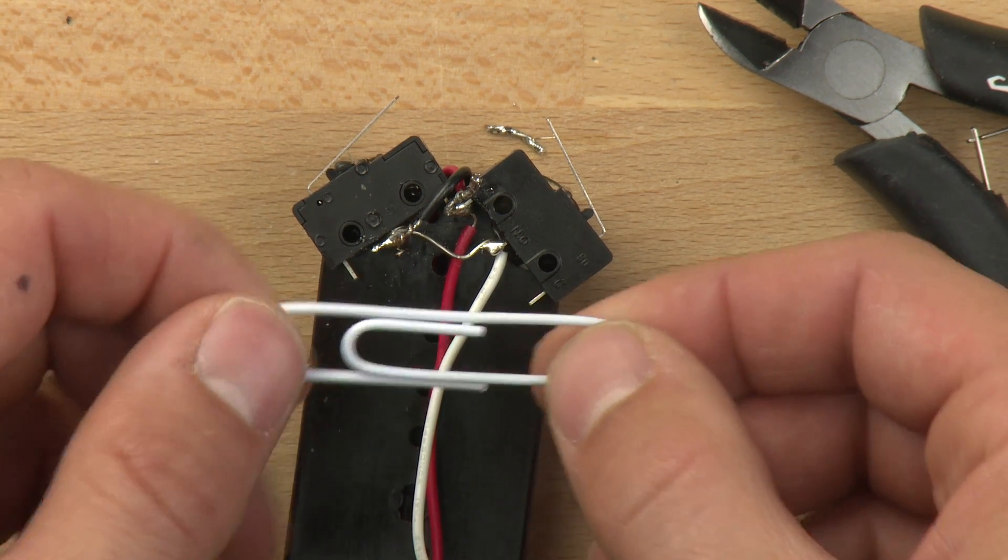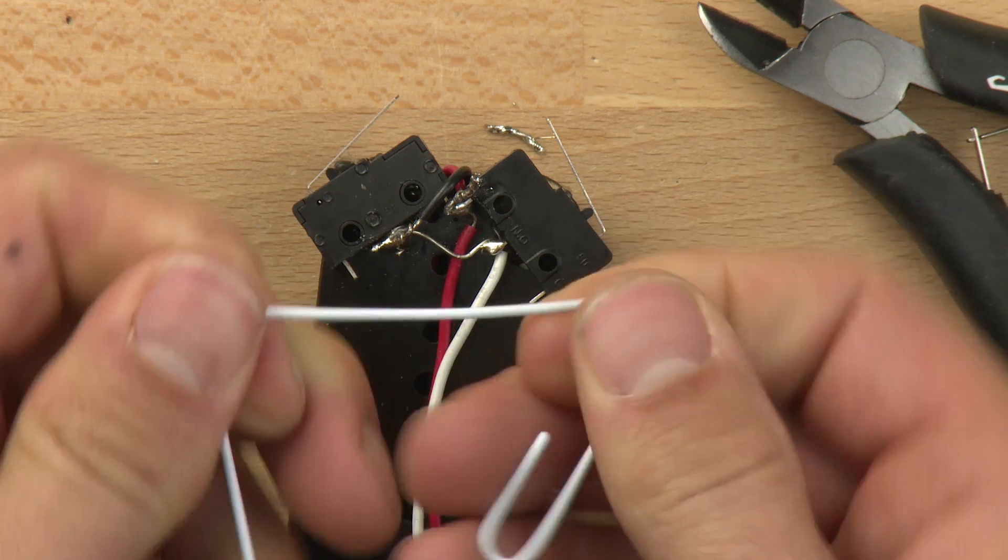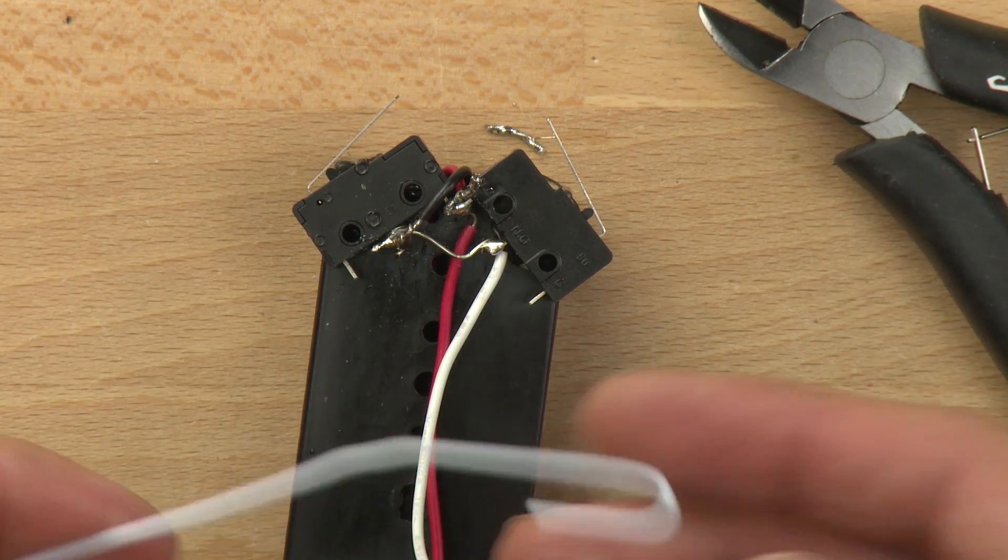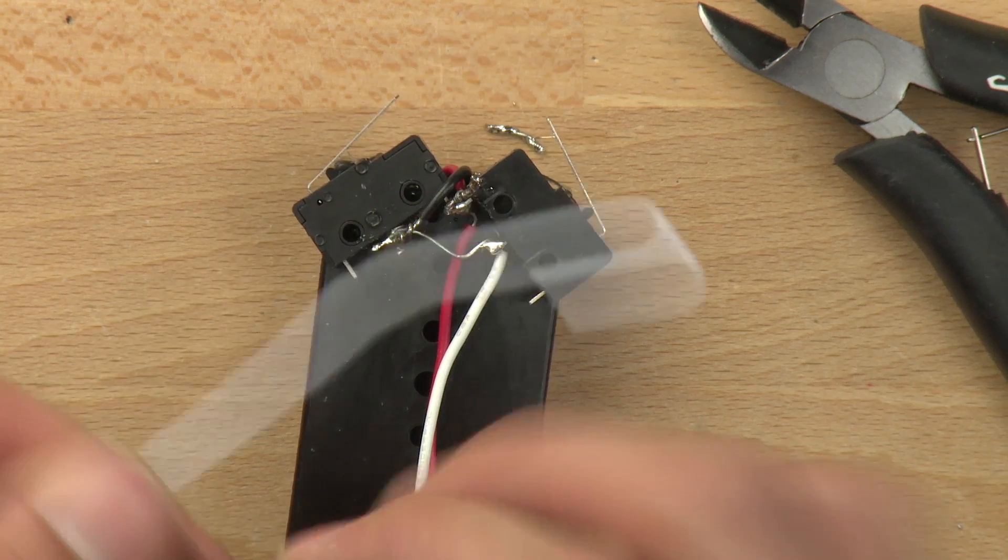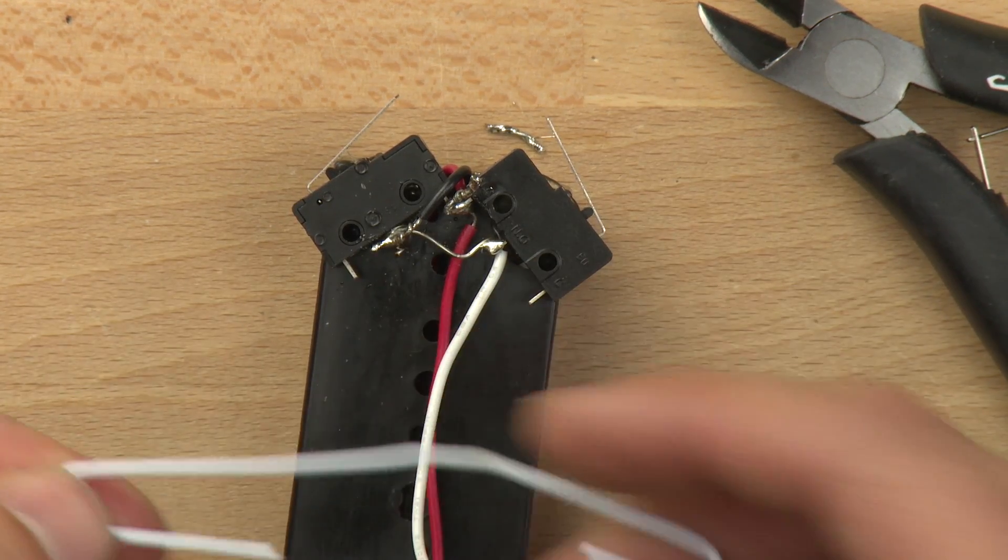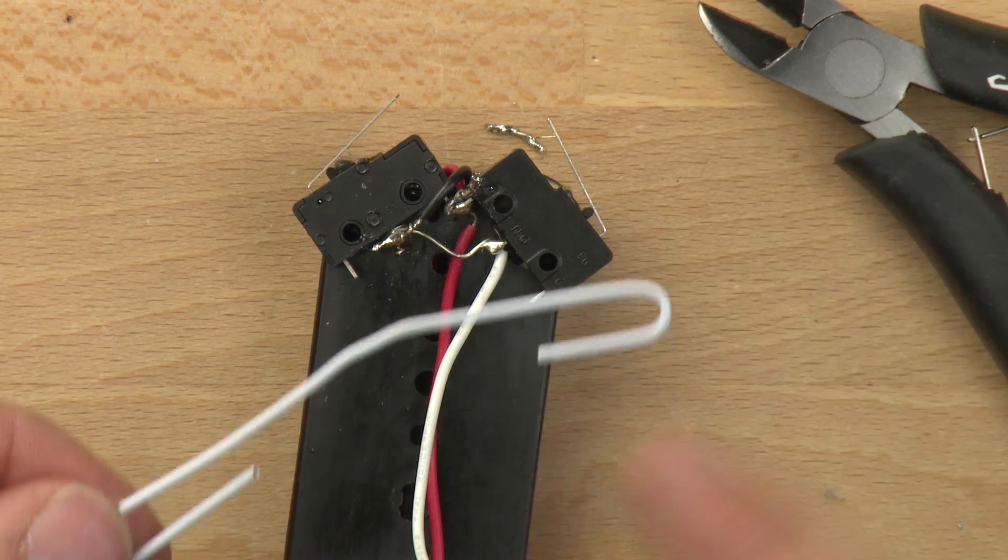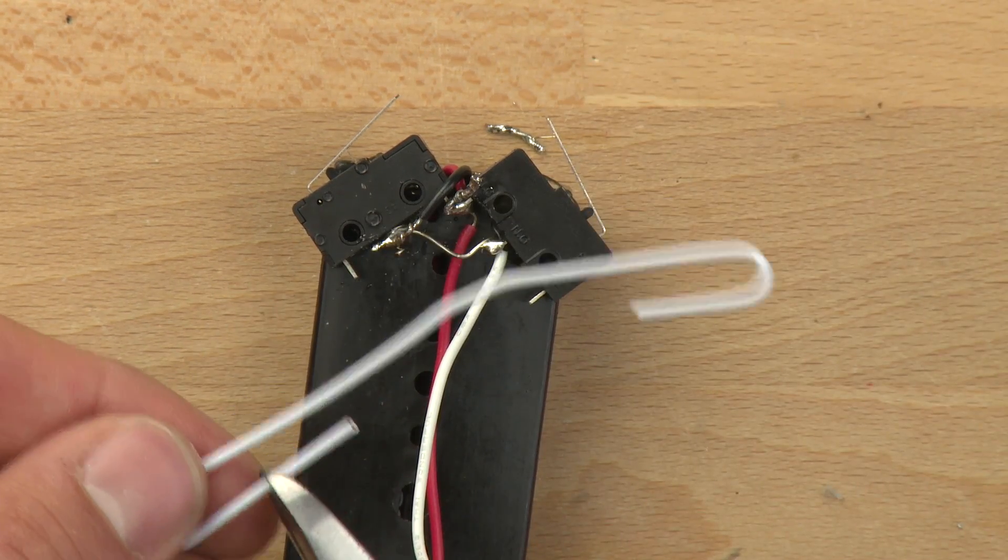We're going to take our paper clip and bend it out like this. It's okay if it's curved still like that on the end. We only need it to be about that long on the end, so we'll cut off the excess.